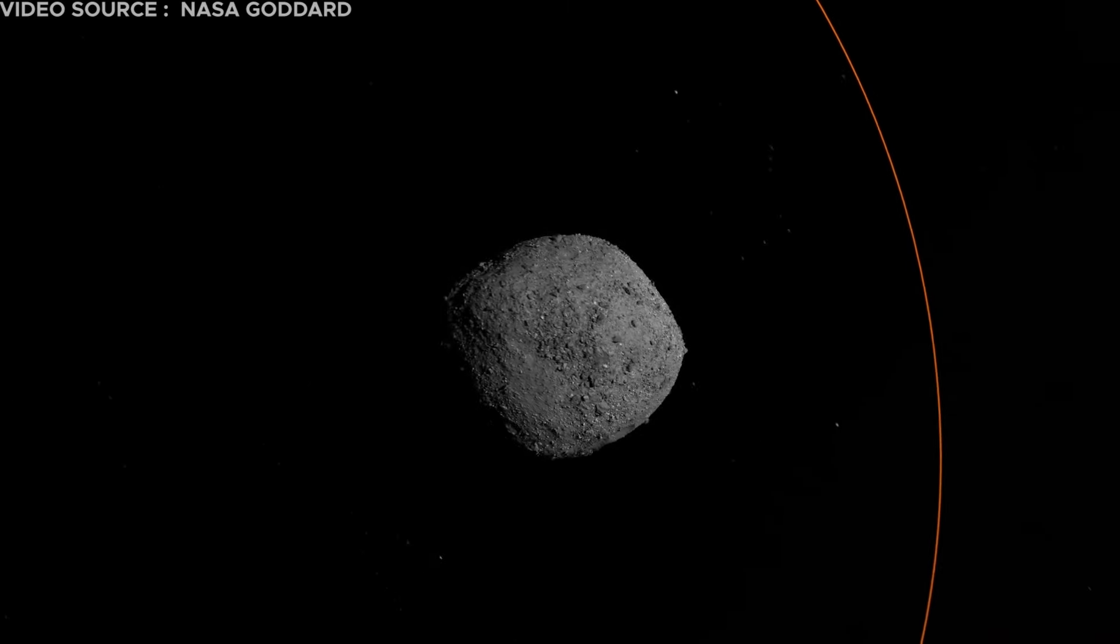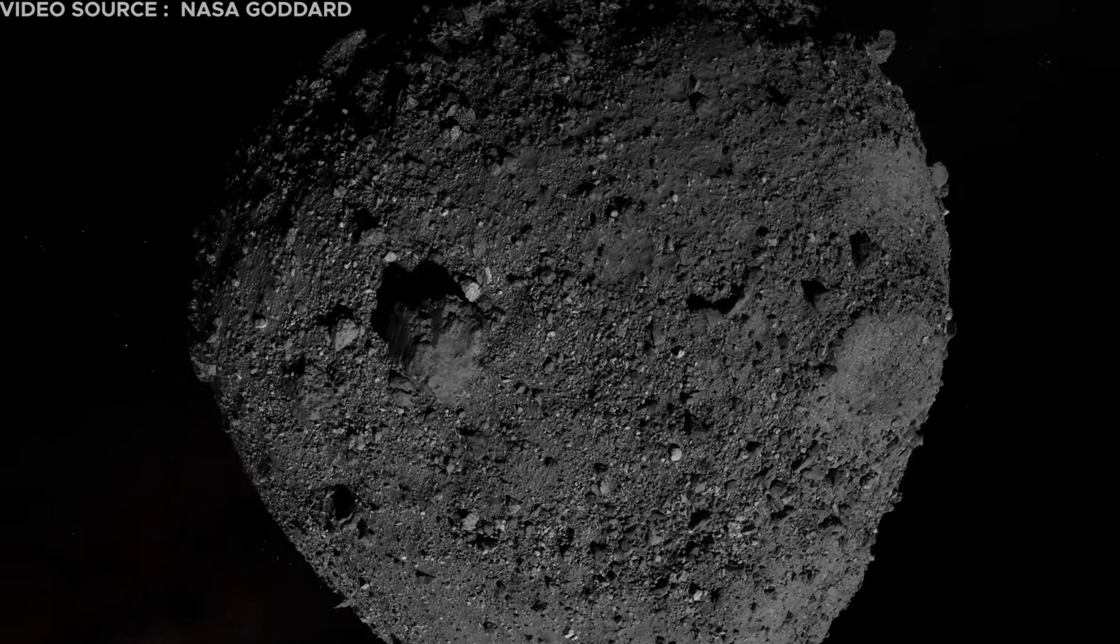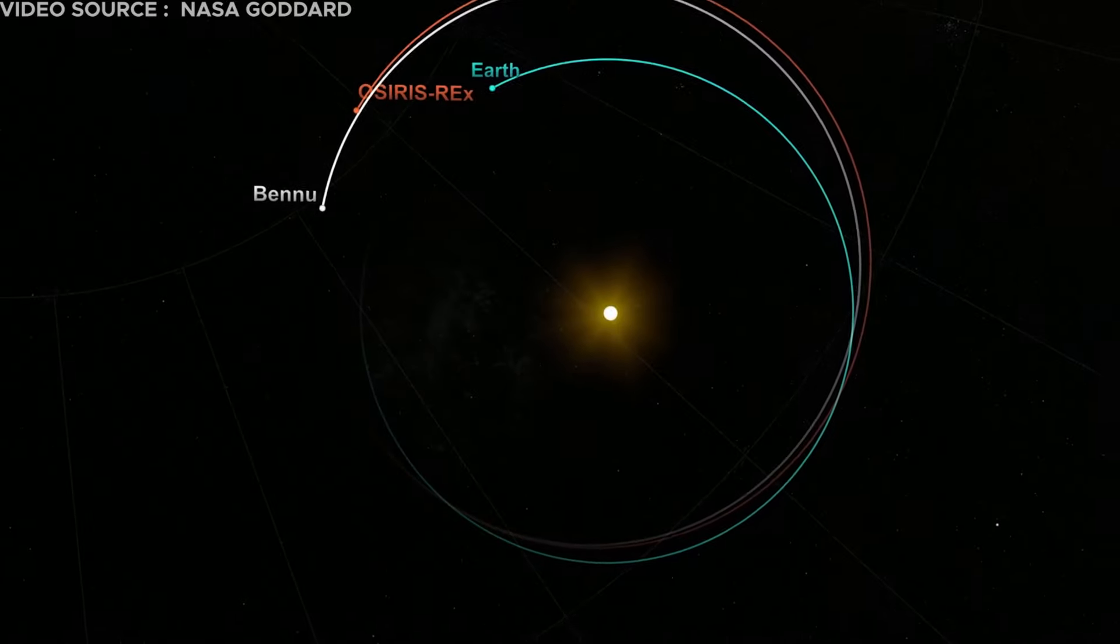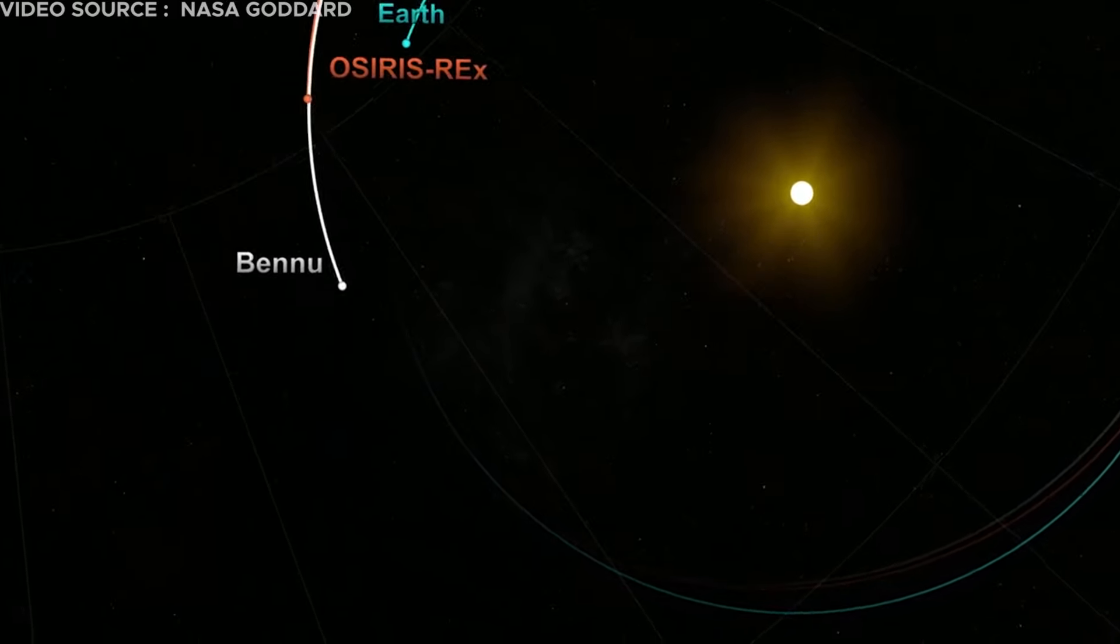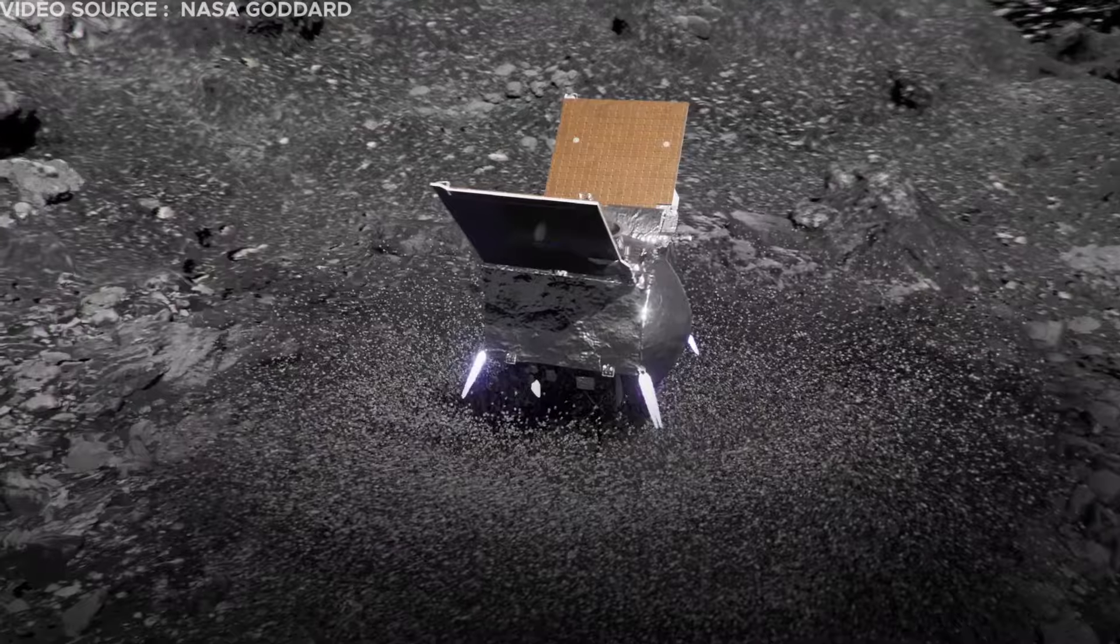Bennu, classified as a potentially hazardous asteroid, boasts dimensions of approximately one-third of a mile at its equator and is considered an ancient relic with more than 4.5 billion years of solar system history.